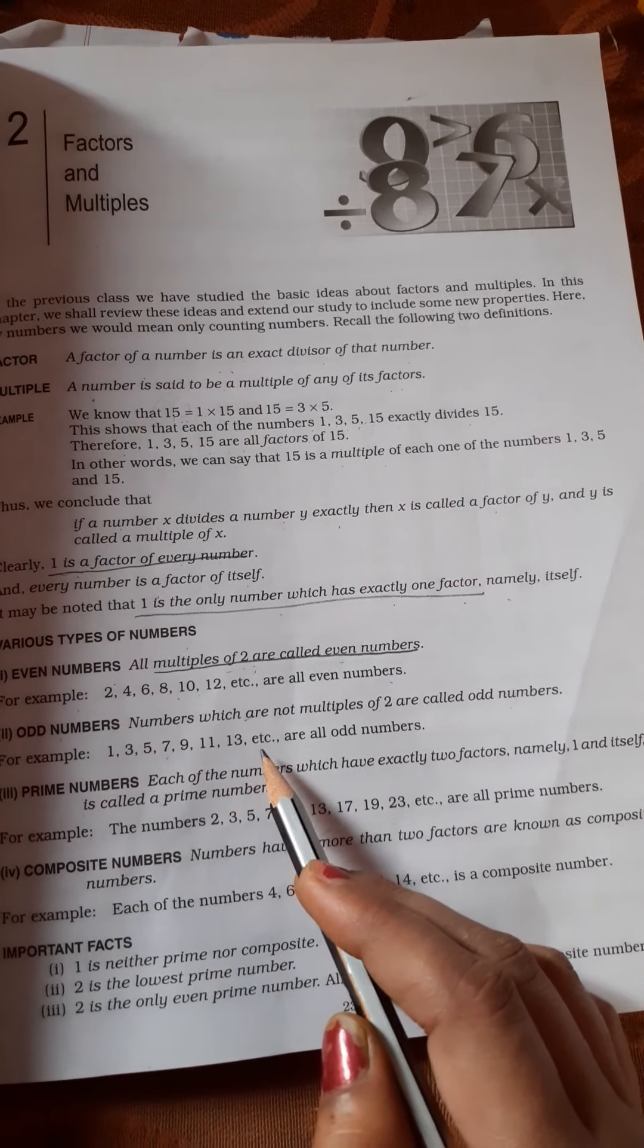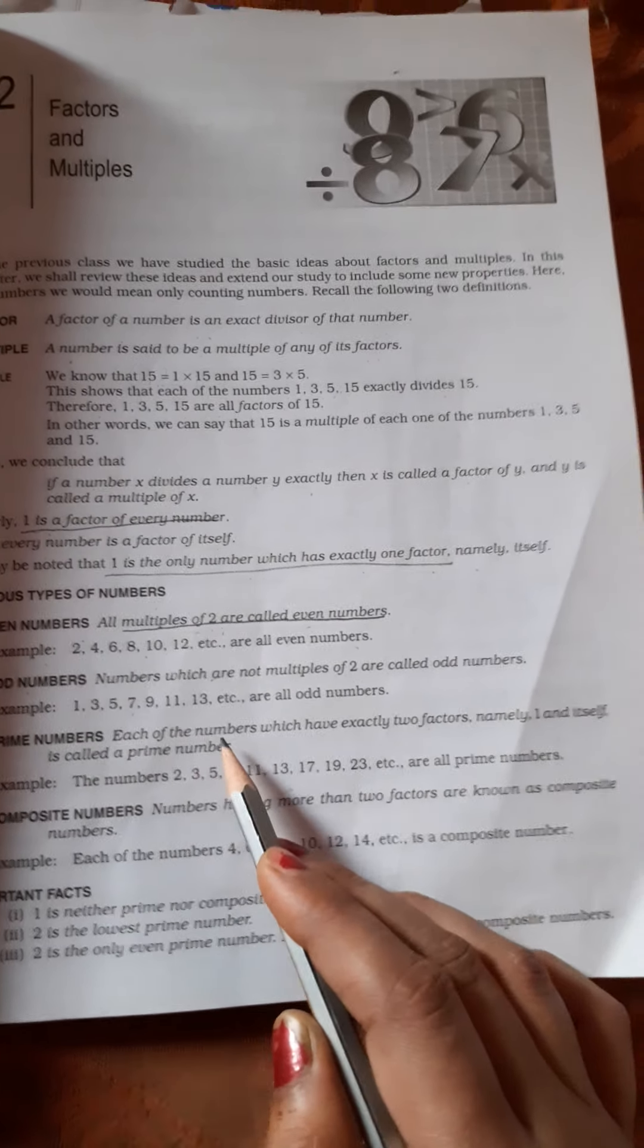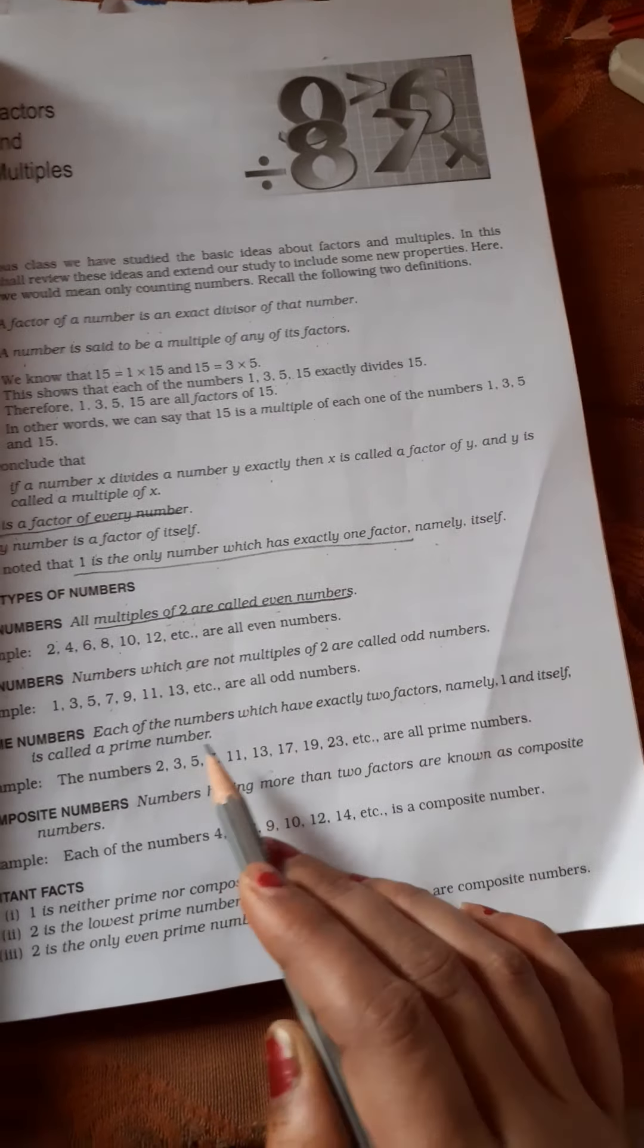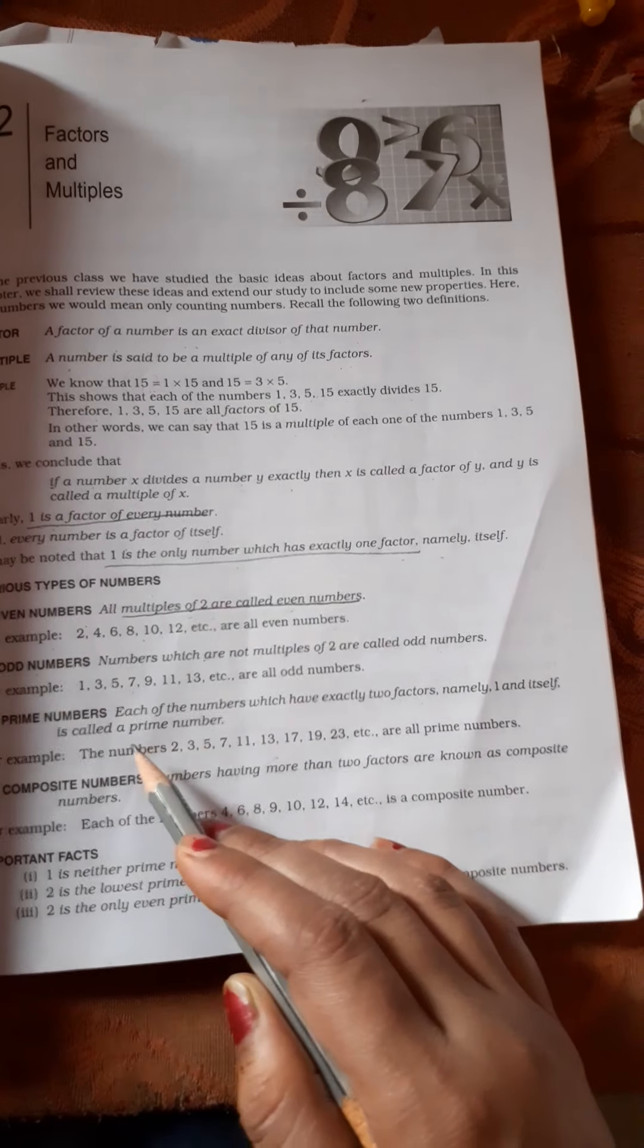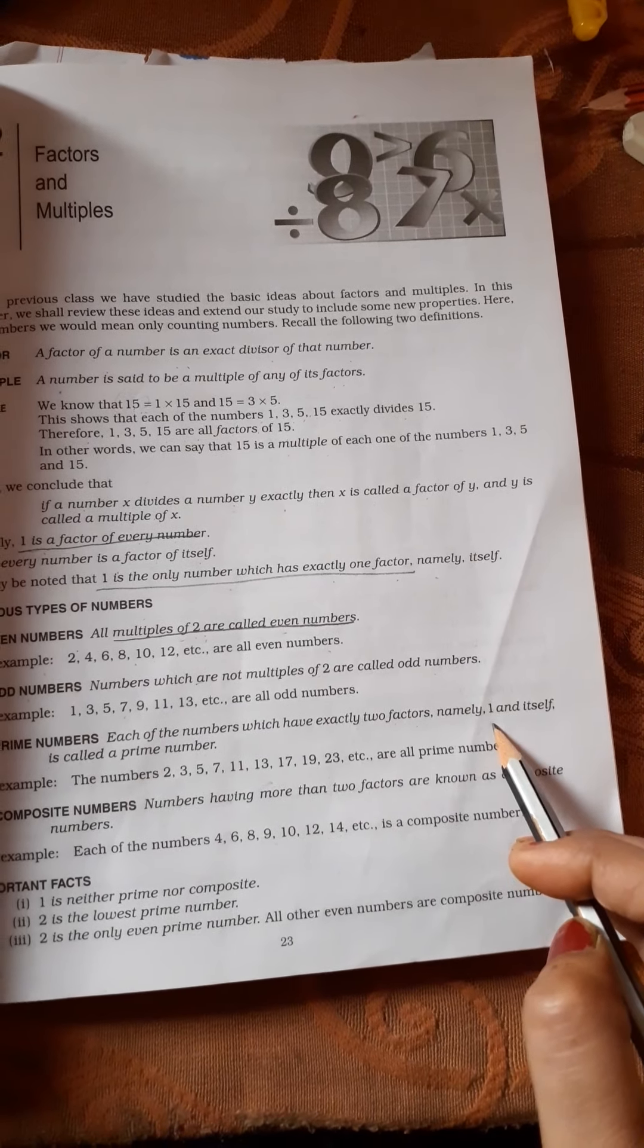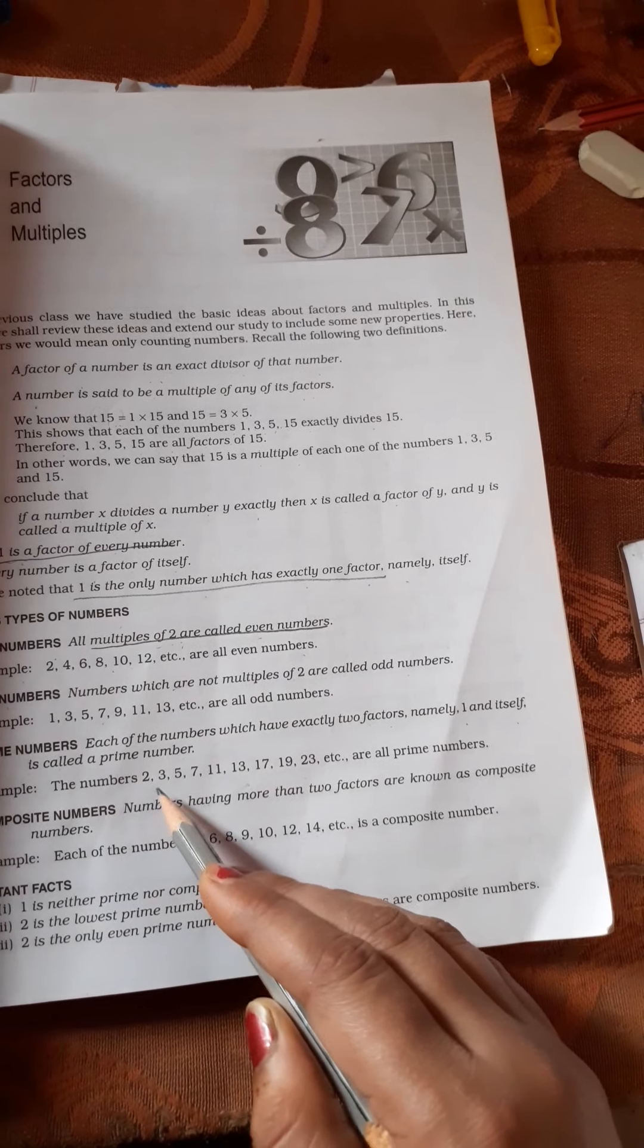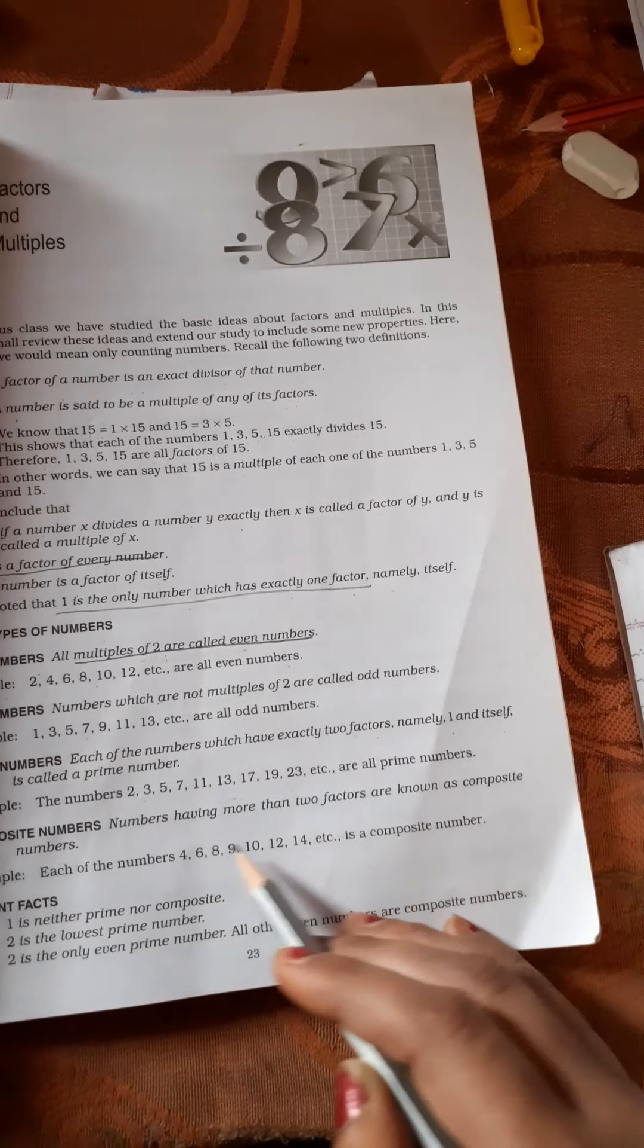For example, 2, 4, 6, 8, 10, 12, etc. are all even numbers. Odd numbers are those which are not multiples of 2: 1, 3, 5, 7, 9, 11, 13 are all examples. Prime numbers are numbers which have exactly 2 factors, namely 1 and itself. For example, 2, 3, 5, 7, 11, 13 are all prime numbers.